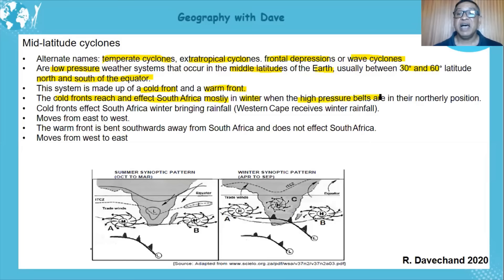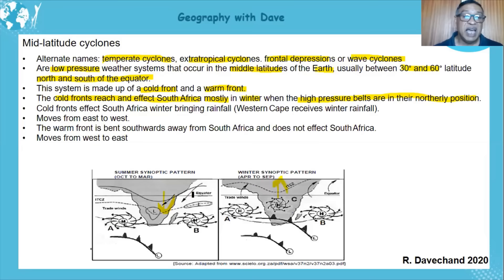We sometimes get cold fronts coming through in late summer when high pressure belts are in their northerly position. Remember the ITCZ — when it's summer in the southern hemisphere, the ITCZ moves southwards. When it's winter in the southern hemisphere, the ITCZ is found in the northern hemisphere. The ITCZ — intertropical convergence zone — is a low pressure area.